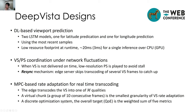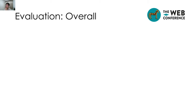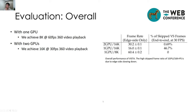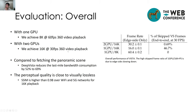The overall target is the QE, which is a weighted sum of five metrics described later. For the overall evaluation results: with one GPU, we can achieve 8K and 60fps video playback; with two GPUs, we can achieve 16K and 30fps video playback. Compared to fetching the panoramic video directly, DeepVista reduces last-mile bandwidth consumption by 52% to 69%. The perceptual quality is close to visually lossless, achieving SSIM higher than 0.89 over Wi-Fi and 5G networks for 16K playback.